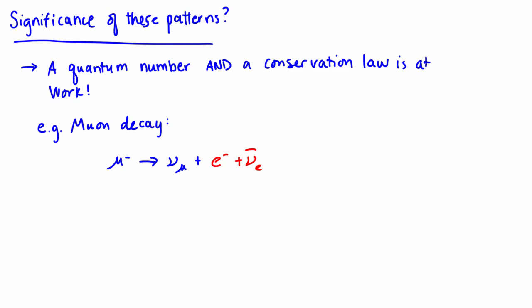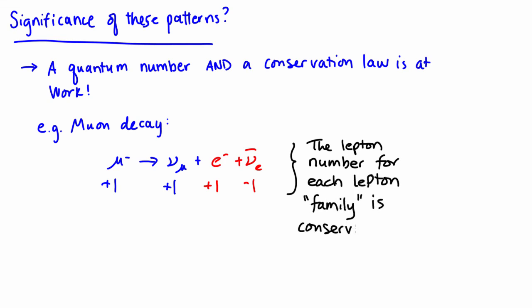what you'll see is on the left side, you have a plus one for the muon family. On the right side, you also have a plus one for the muon family. You also have a plus one for the electron, and a minus one for the anti-electron neutrino. So, in this reaction, the lepton number for each lepton family is conserved.